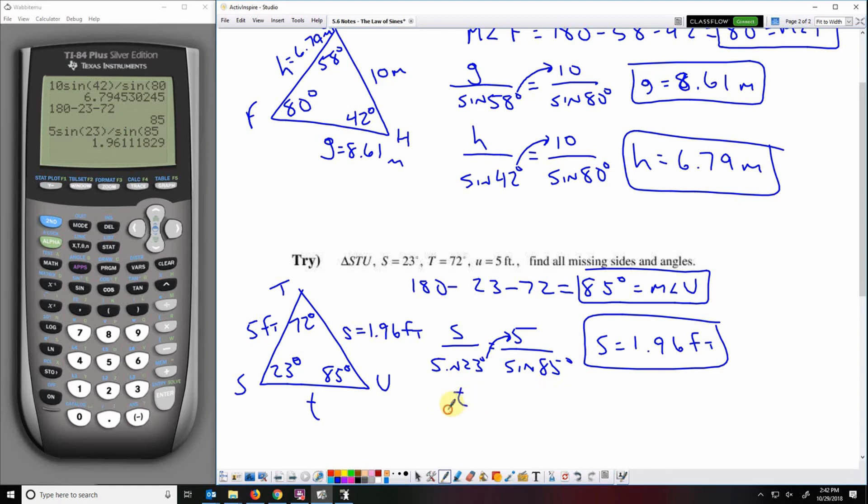And then T over sine 72 equals 5 over sine 85. So I'm going to multiply that sine 72 across, 5 sine 72 divided by sine 85. 4.77 feet.